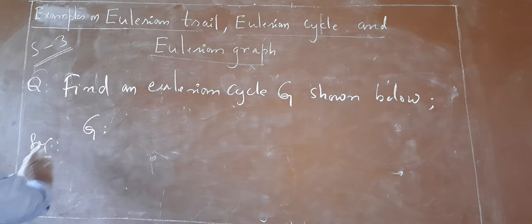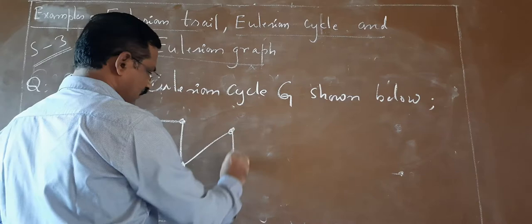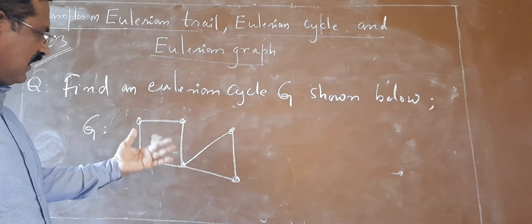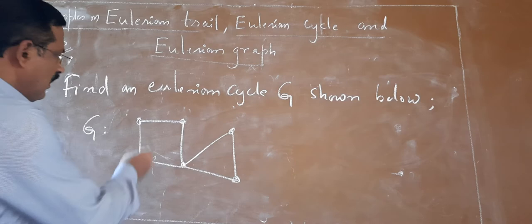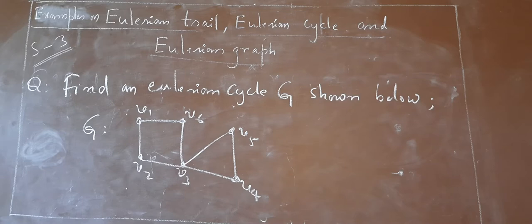A graph is given, and from that graph you try to find out the Eulerian cycle. This is the graph. Whatever graph is given, that only you have to consider — from that graph we need to find an Eulerian cycle. If vertices and edges are not labeled, you label them according to your sequence. They are labeled as V1, V2, V3, V4, V5, V6.